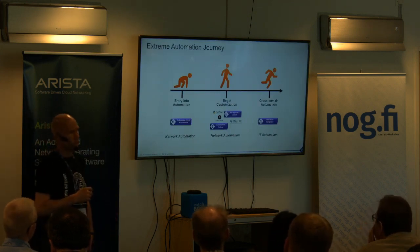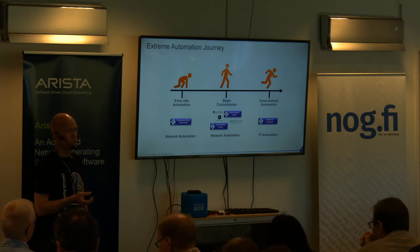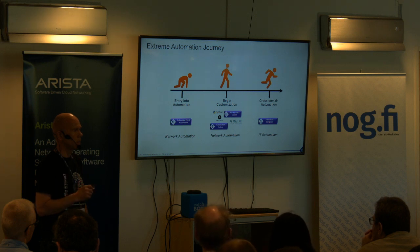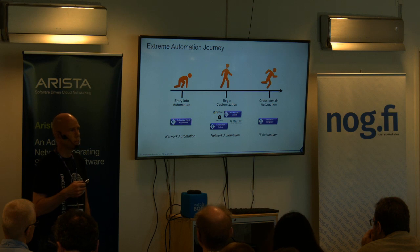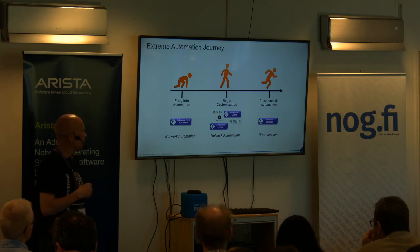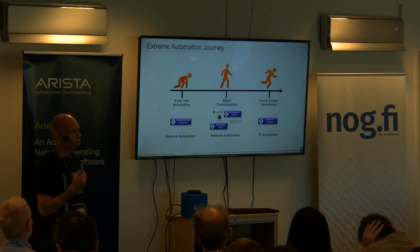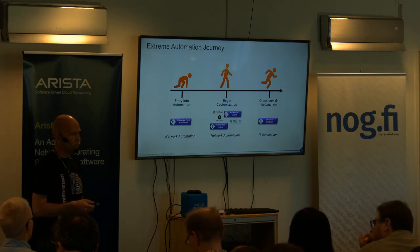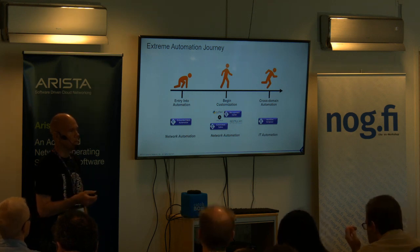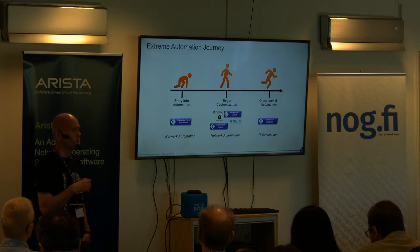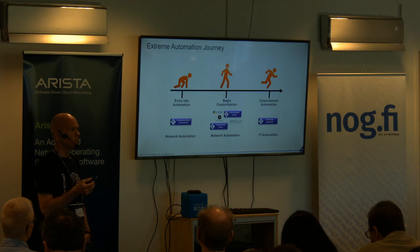The intent is that you start from something, which basically means you probably start from automating your infrastructure — building your network. The next phase is you go into more automation from the point of view of adding services, automating services, putting in tenants. Eventually you get all the way to the right-hand side with cross-domain automation, meaning closed-loop cross-domain automation. That means you don't only automate the network infrastructure itself, but you also automate applications and events — basically the IFTTT 'if this then that' concept.